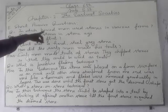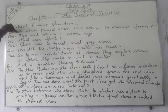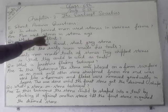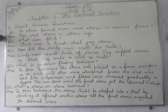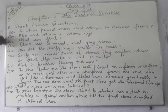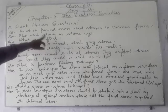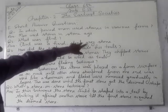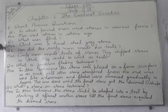In which period did man use stones in various forms? Second question: what was flint? Flint was a hard, steel-grey stone — a very hard stone.